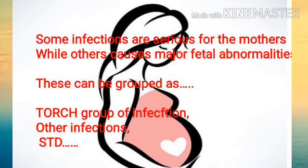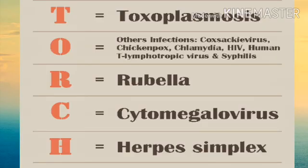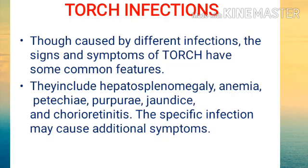Among these, the most important one is TORCH infection. You may be familiar with this word. TORCH stands for: T - Toxoplasmosis, O - Other infections, R - Rubella, C - Cytomegalovirus, H - Herpes Simplex Virus. Others include Coxsackievirus, Chickenpox, Chlamydia, HIV, Syphilis, etc. These are the main infections that, if occurring during pregnancy, cause major fetal abnormalities.